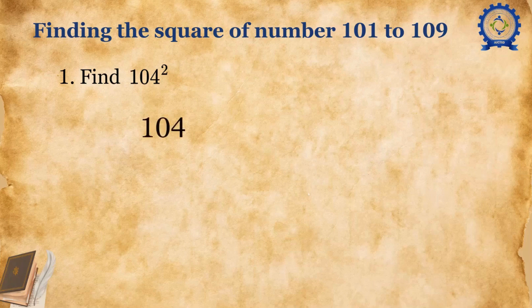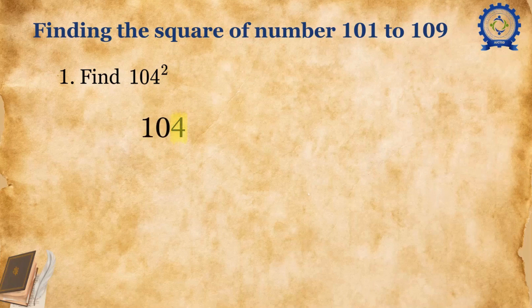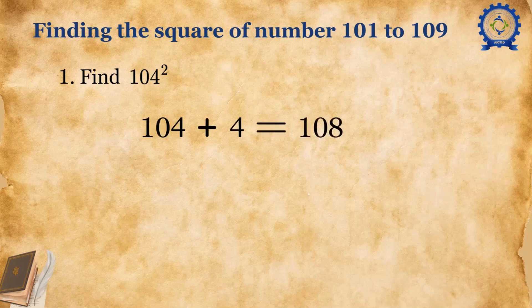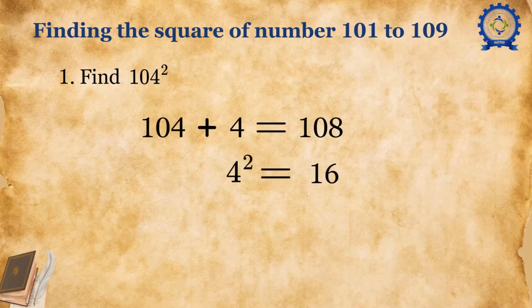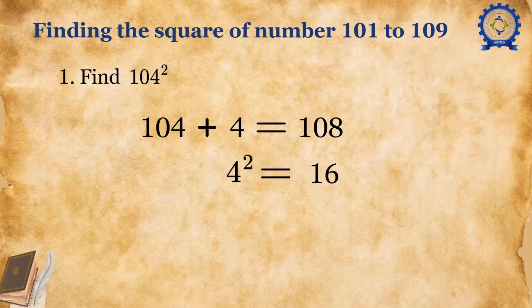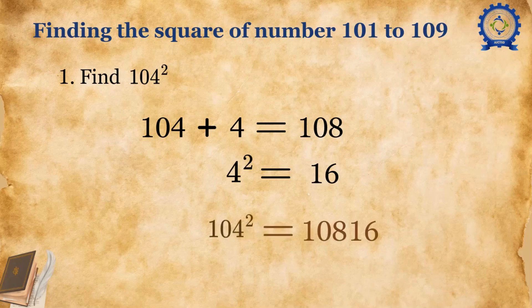We'll consider the number. Take the unit digit, that is 4, add it with the original number. So the result is 108. Next, we'll take the same unit digit and square it. So the answer is 16. Next, we have to combine these both values, that is 108 and 16. So our final answer is 104² = 10,816.